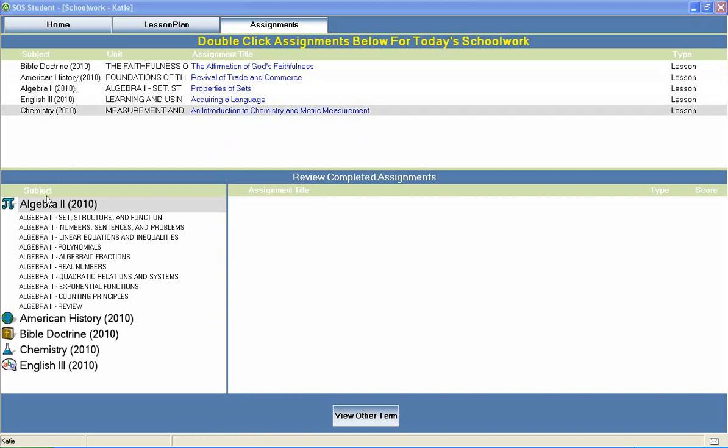Switched On Schoolhouse Algebra 2 is a high school math course which is typically included in an 11th grade course of study and includes units on set structure and function, linear equations and inequalities, algebraic fractions, quadratic relations and systems, counting principles and much more.